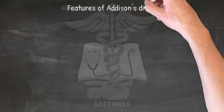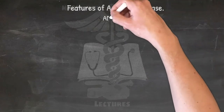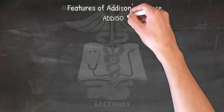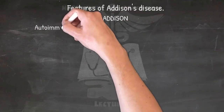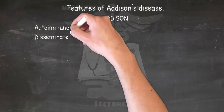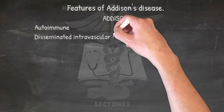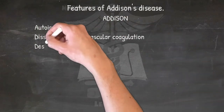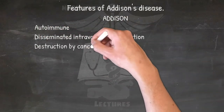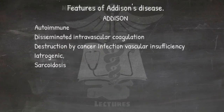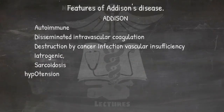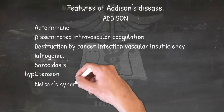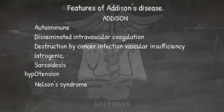Features of Addison's disease: ADDISON — Autoimmune, Disseminated intravascular coagulation, Destruction by cancer, Iatrogenic, Sarcoidosis/granulomatous, with findings such as Hypotension, Hyponatremia, and also Nelson's syndrome.